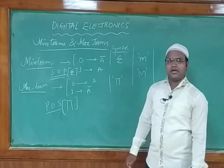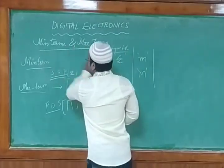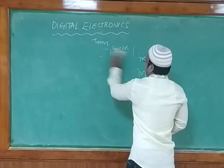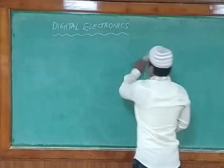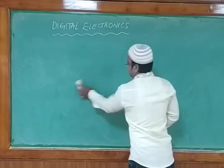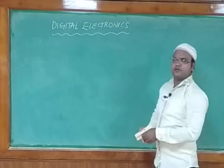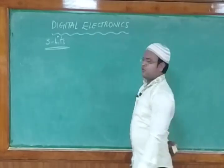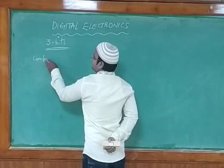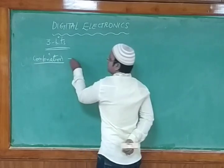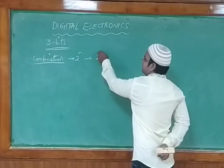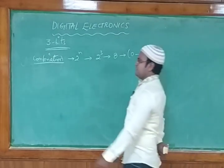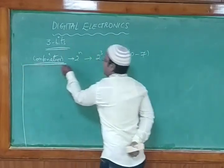Now let us consider three-bit variables and design the truth table for minterm and maxterm. For 3 bits, the total number of combinations is 2^3 = 8, giving bit ranges from 0 to 7. We have three bits: a, b, and c. Digit 0 means all zeros; we use positional weights 2^2=4, 2^1=2, 2^0=1.